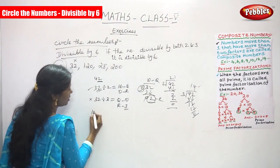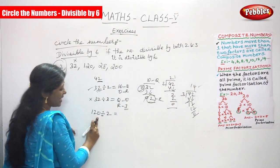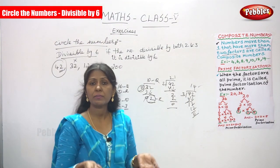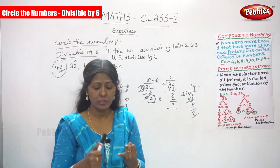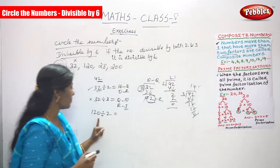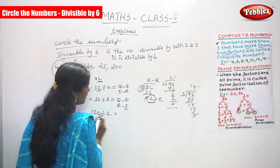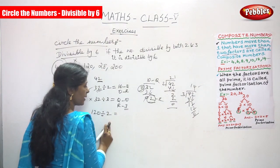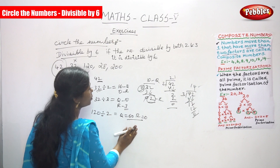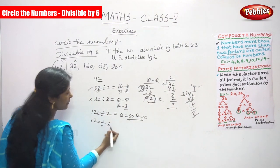Next is 120. Is 120 divisible by 2? Yes, because the last digit is 0, which is an even number. The rule for divisibility by 2 is that the number ends with 0, 2, 4, 6, or 8. So 120 is divisible by 2 — quotient 60, remainder 0.